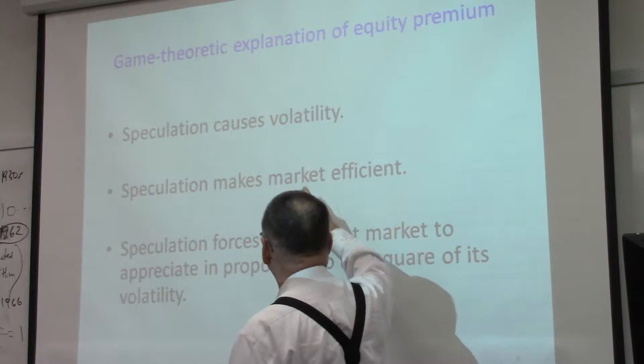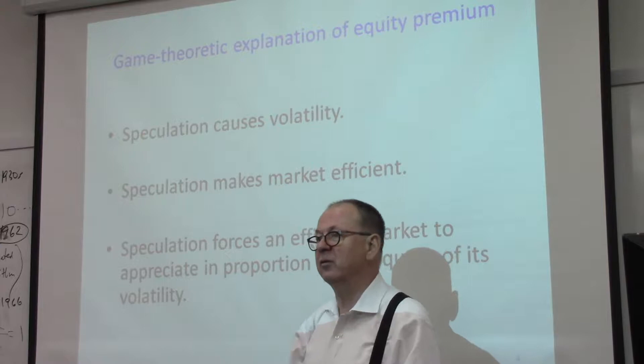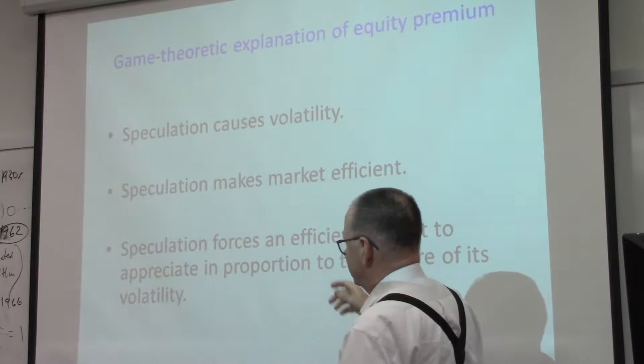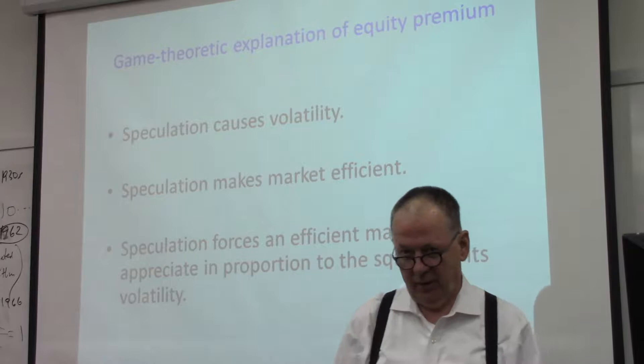The game-theoretic explanation is that speculation is the primary cause of the volatility of stock prices. In other words, stock prices vary a certain amount, and most of that variation is just due to speculation. Speculation is what makes the market efficient.